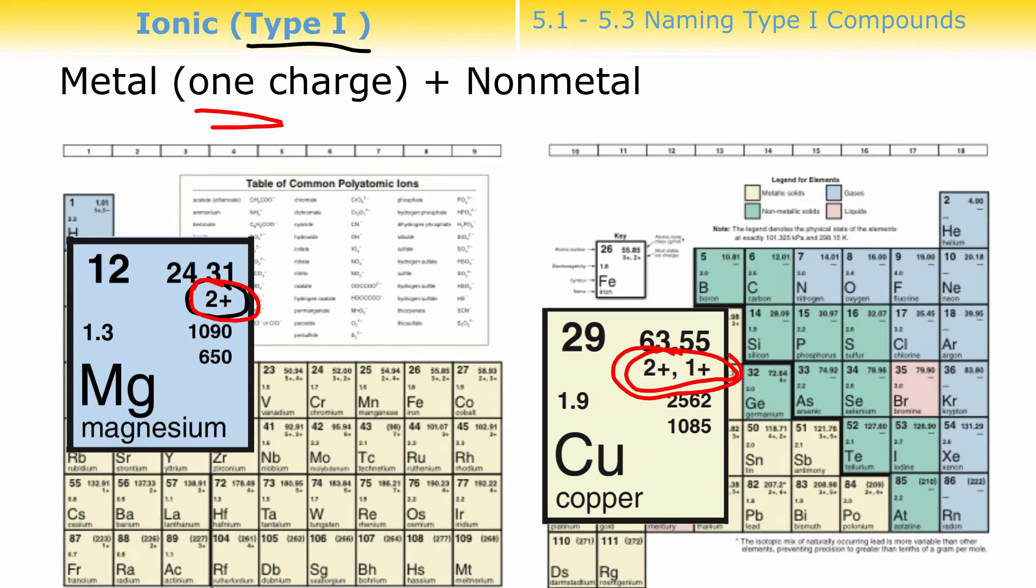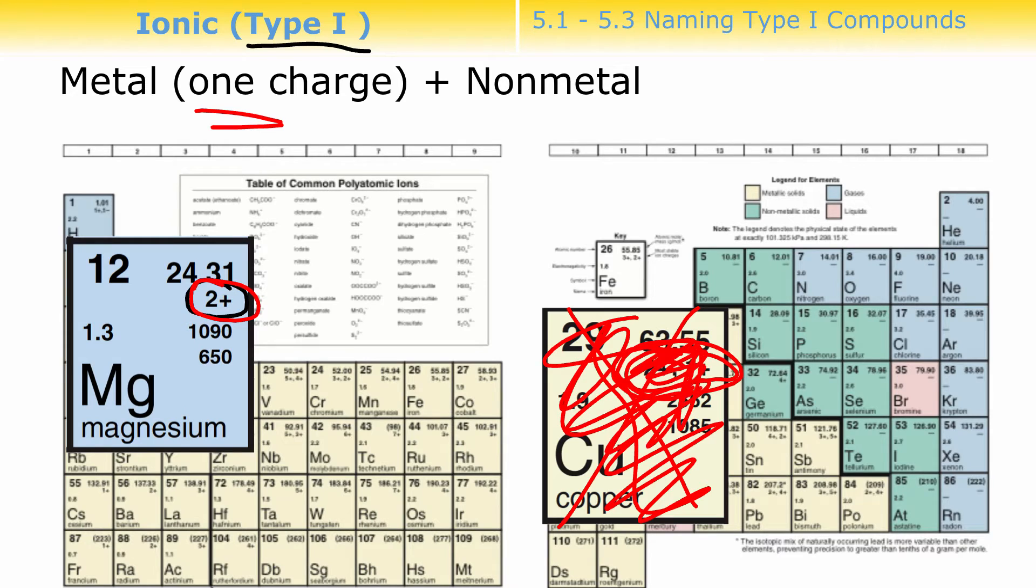If I have, like, copper, and it has two charges, it would be a type 2 compound. So it shouldn't even be classified here because it's a type 2 compound. It's not a type 1 compound. So any metal over here that only has one charge, if you hook that up with something over there, that would be a type 1 compound. Metal, nonmetal, one charge, type 1 compound.